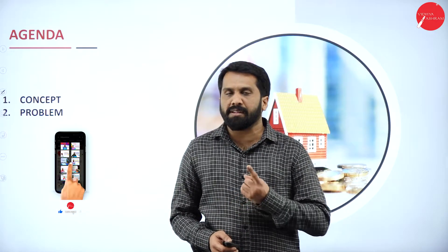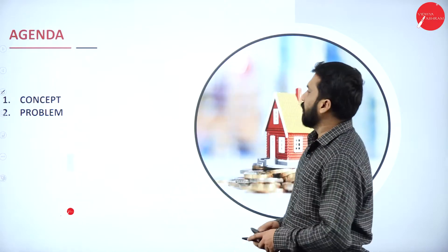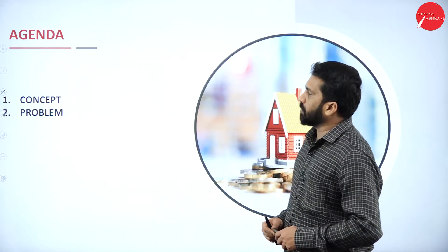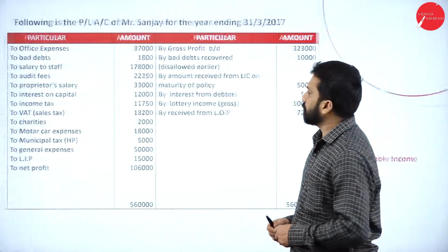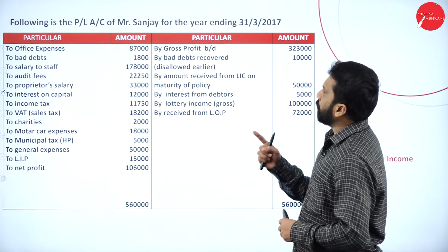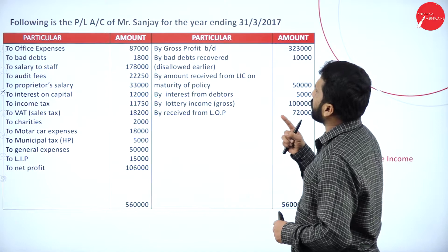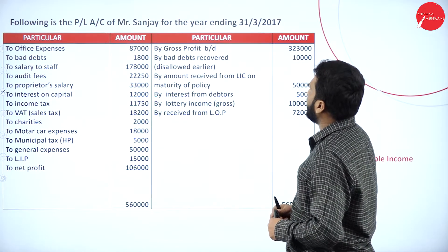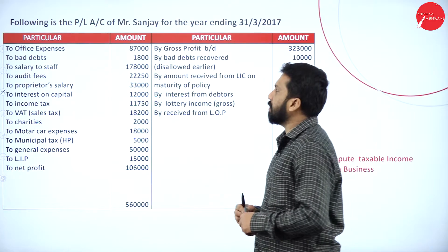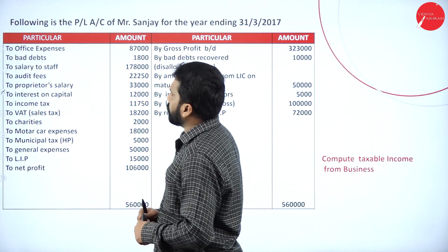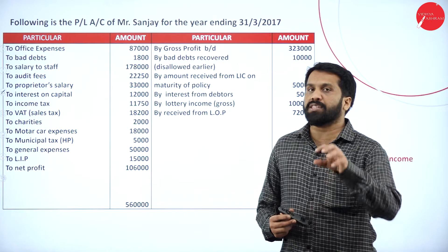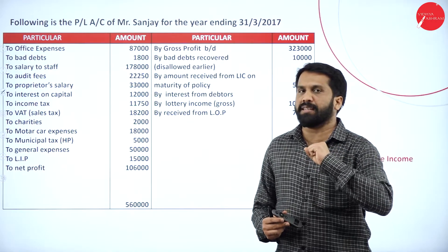Today you will understand better what is the tax liability. In the agenda we have concept as well as problem. Following is the P&L account of Mr. Sanjay for the year ending 31st March 2017. These are the informations we have and we are supposed to find out which are your taxable income.